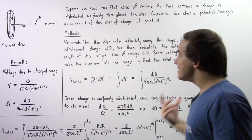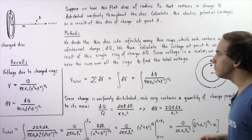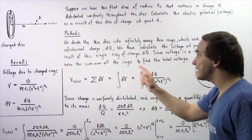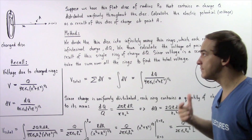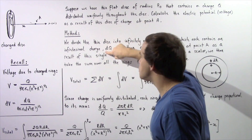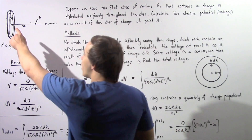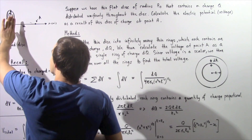We are going to follow the following method in solving our problem. We divide the thin disk into infinitely many thin rings in which each ring contains the same exact quantity of charge given by an infinitely small charge dq. One example of such a ring is shown by the following outline.